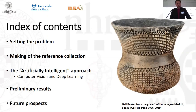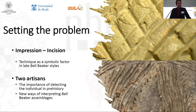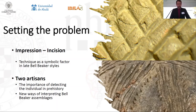Whenever a technological tool is used, especially if it's on the rise, the first thing to do is to identify the problem to be solved with it and to establish a hypothesis that can be verified with the method. In the case of Bell Beaker pottery, there are several problems that can be analyzed with deep learning algorithms and computer vision. In this first approach, we have chosen two of them, different in complexity and scope. The first one is more technical: to identify whether the decoration was made by incision or impression.